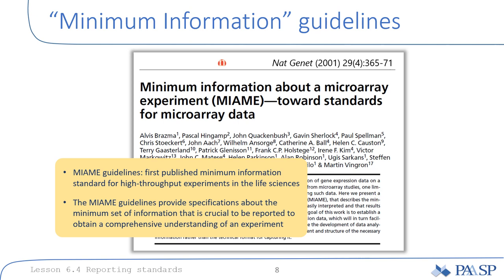The concept of minimum information standards was first introduced in 2001 with a paper published in Nature Genetics presenting minimum information about a microarray experiment, which they called MIAME. Here the authors developed and provided detailed guidance on what information and metadata about such a microarray experiment is crucial and important to be reported, to provide the full picture of what happened in a published microarray experiment, so that any datasets generated can be used to their full potential.